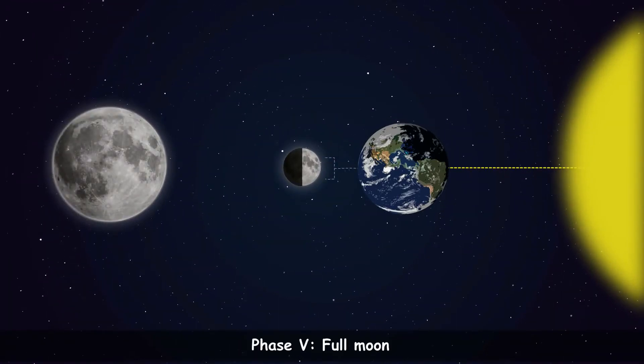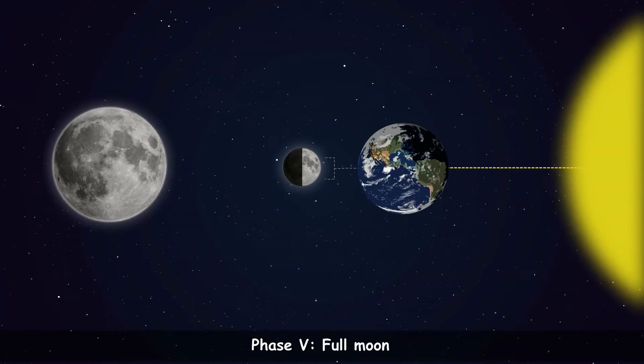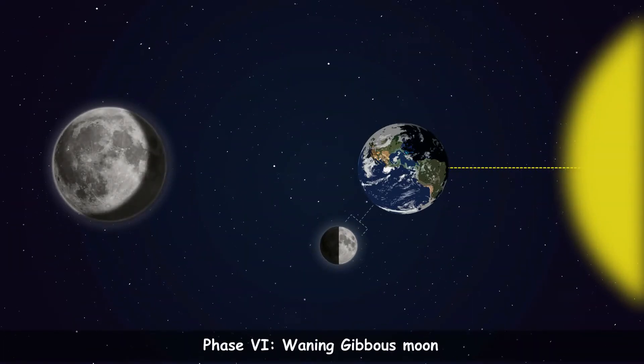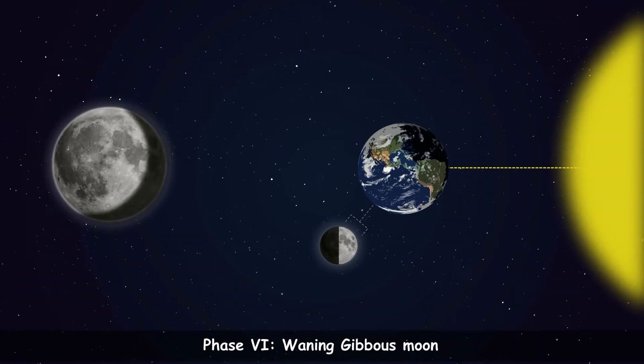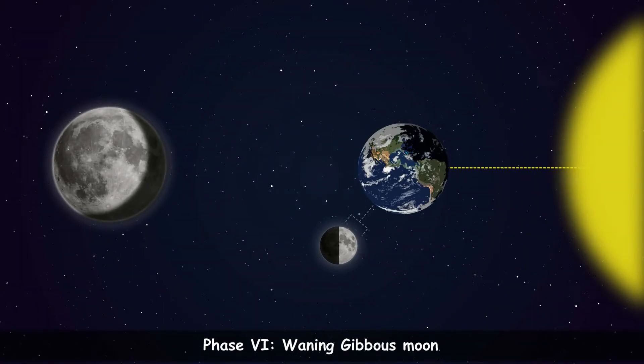Phase 5 is the Full Moon. The moon appears beautiful. Phase 6 is the Waning Gibbous. The moon is waning, that is decreasing, going from Full Moon to Quarter Moon.